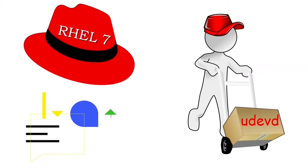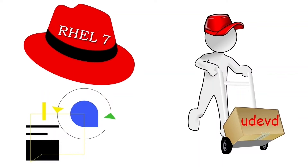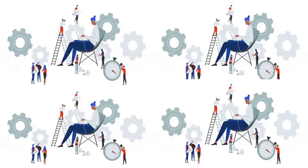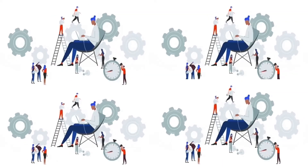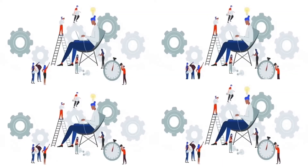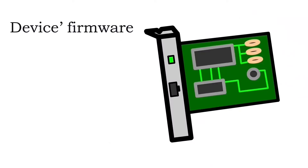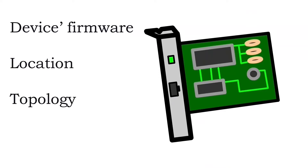Starting from RHEL7, the UDEVD service provides the default naming scheme for network interfaces. This service uses many rulesets to assign a unique name to each interface. To generate a unique name for an interface, it uses the device firmware, location, topology, and type.